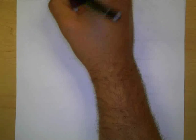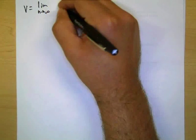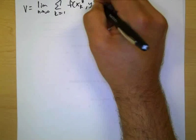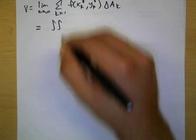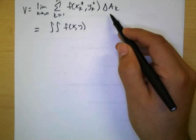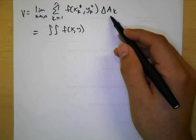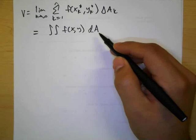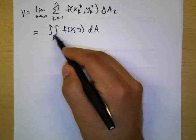So if we go one step further, the limit as n approaches infinity of the Riemann sum from k equals 1 of f of x sub k star y sub k star times delta a sub k now becomes the double integral of f of xy. The delta x sub k became dx right? Delta a sub k is going to become da, but eventually dx or dy or dy and dx.